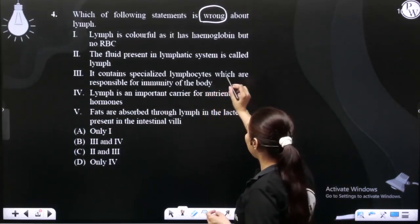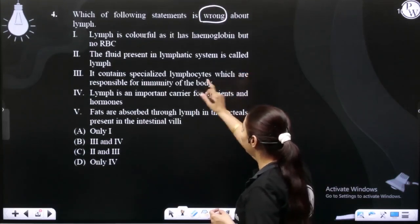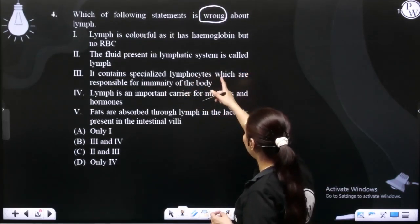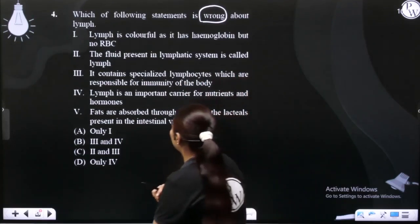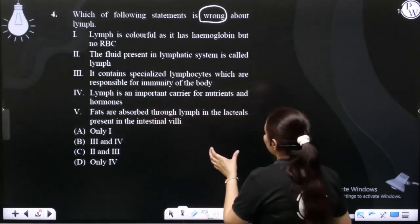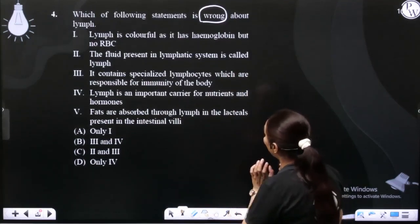Statement 1: Lymph is colorful as it has hemoglobin but no RBC. Statement 2: The fluid present in lymphatic system is called lymph.